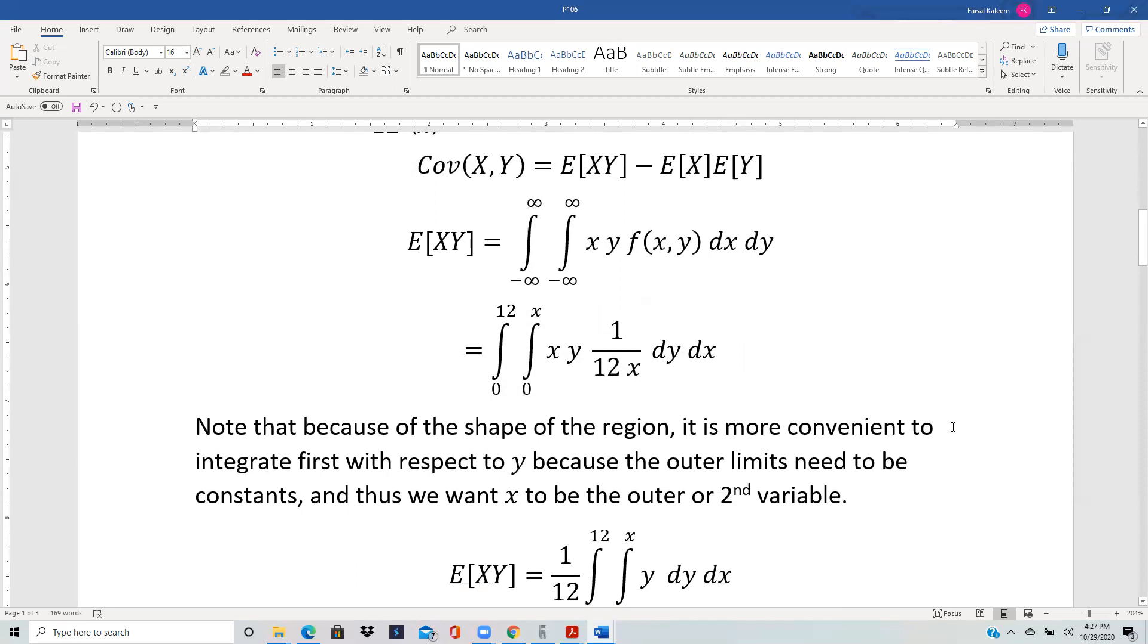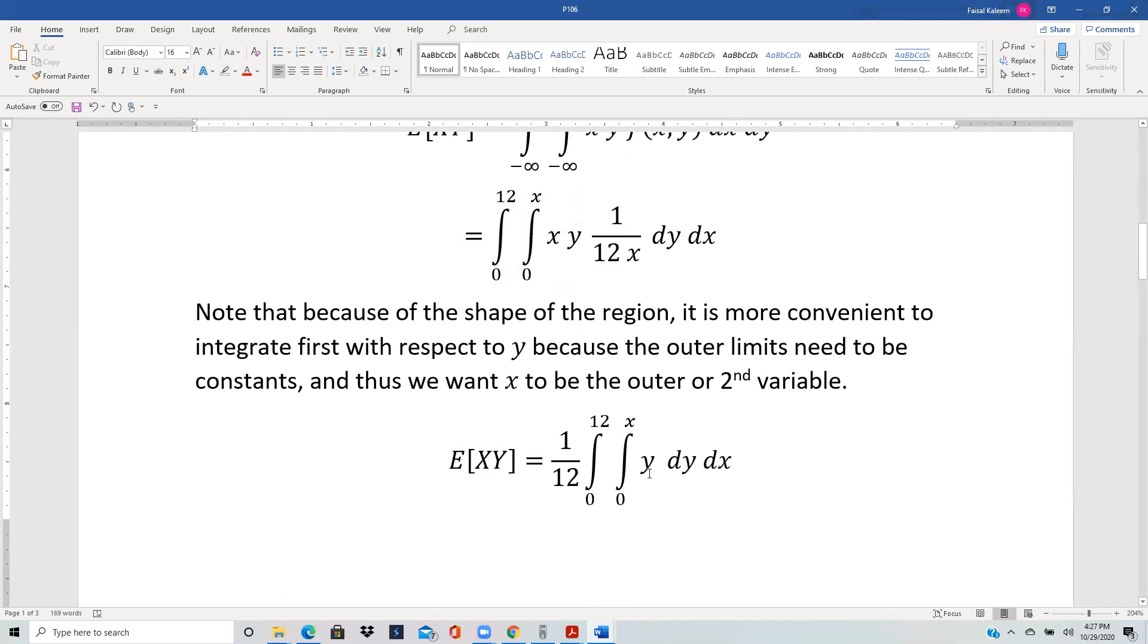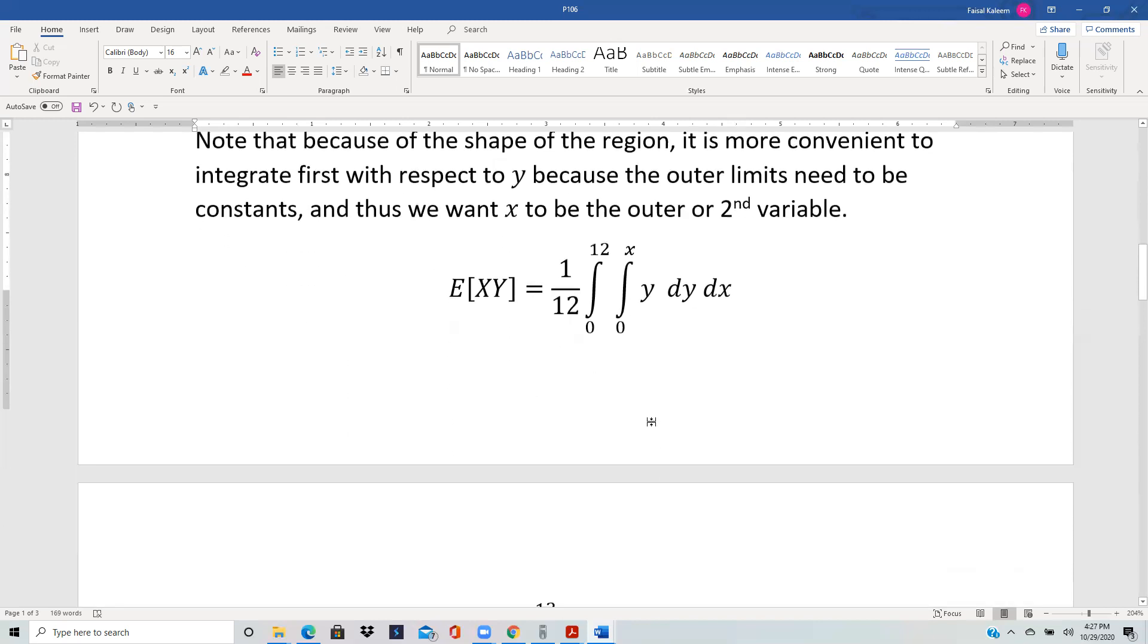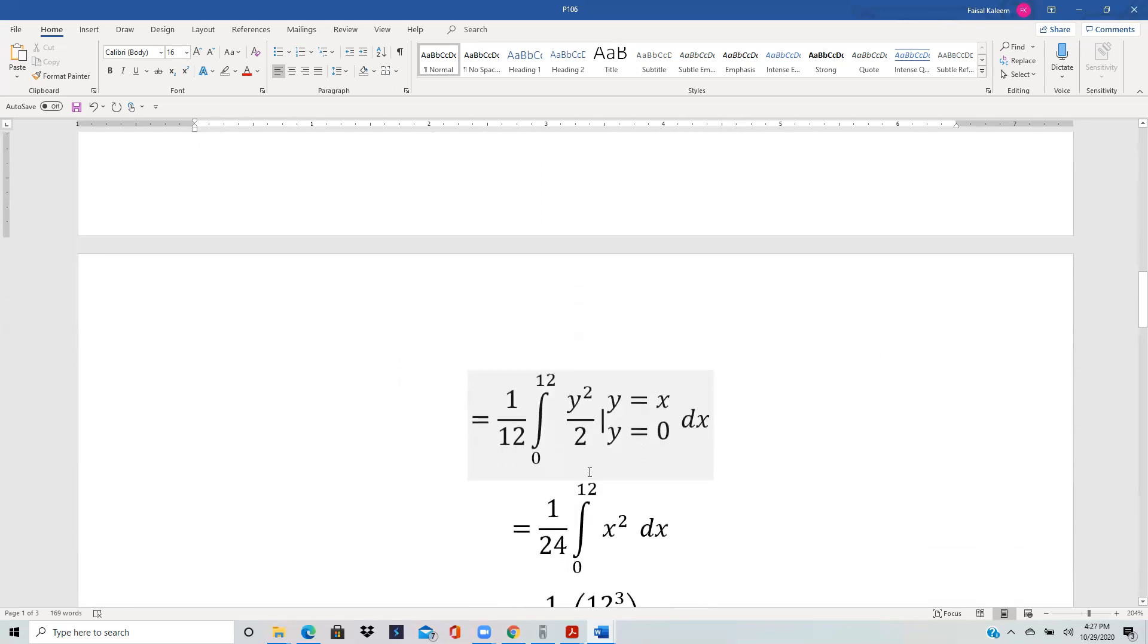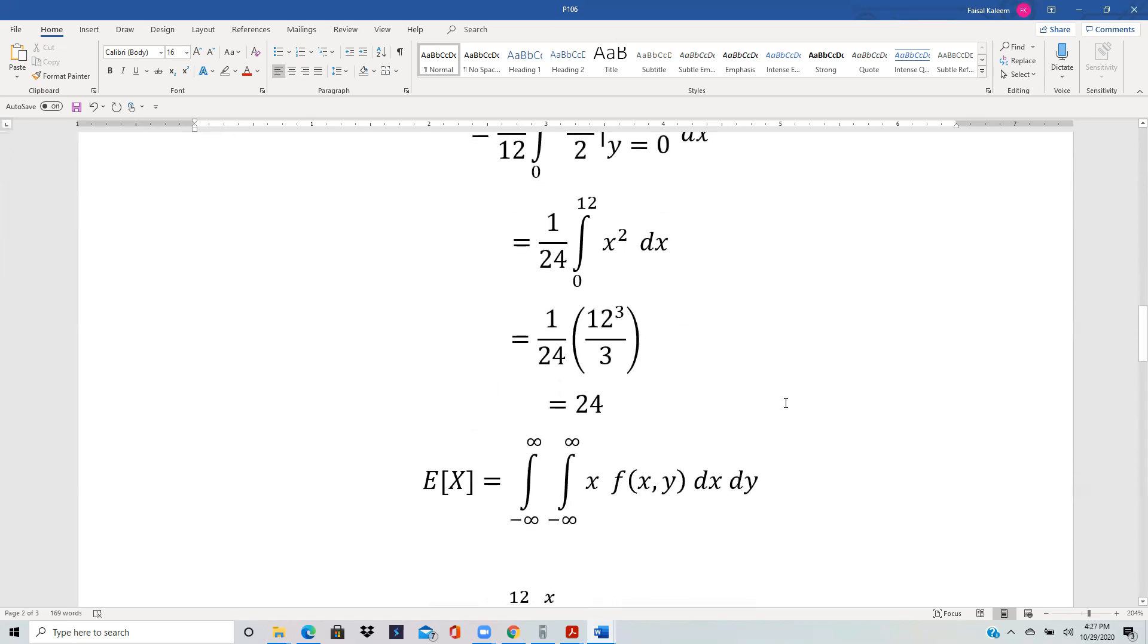The joint PDF: we have xy times 1 over 12x, that was the joint PDF. The x's cancel out. When I put 1 over 12 out it's just y dy, which integrates to y squared by 2 from 0 to x. You get x squared by 2 after you put in the limits, and the 2 joins with the 12 here. This integrates to x cubed by 3, which is 12 cubed by 3, and it's 24 in the end.